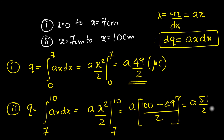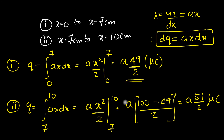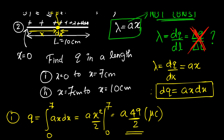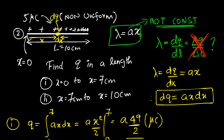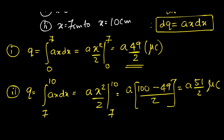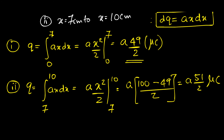Notice something amazing: the last three centimeters contain more charge than the first seven centimeters. That is actually quite intuitive once you consider the non-uniform distribution — the charge density λ = ax is larger at higher x values, so the region near x = 10 is more densely charged than the region near x = 0.